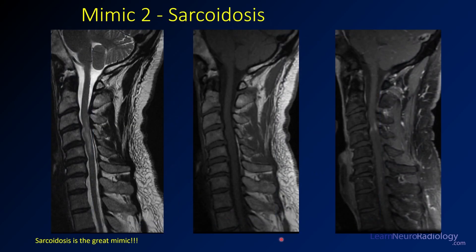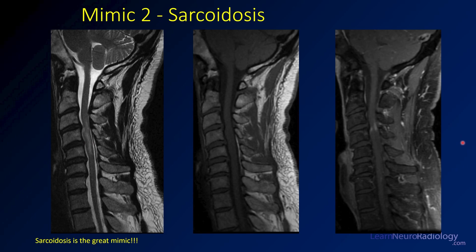Our second mimic is sarcoidosis. At our institution we see a lot of sarcoidosis — it's definitely something to think about. In the modern era, sarcoidosis is a great mimic. We see T2 abnormality in the center of the cord. On post-contrast imaging, the enhancement is particularly along the surface of the cord. There's not a discretely formed mass, although the cord is a little expanded. Keep in mind it might be an inflammatory disease like sarcoidosis.